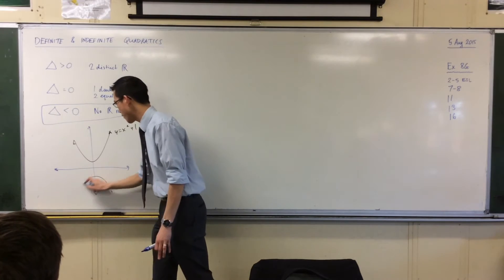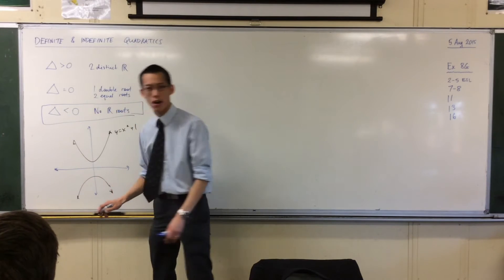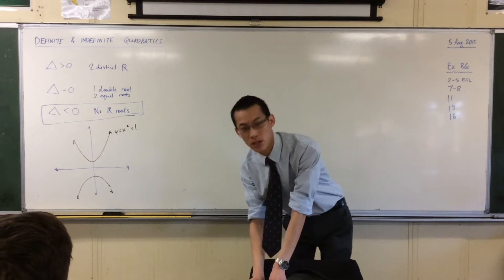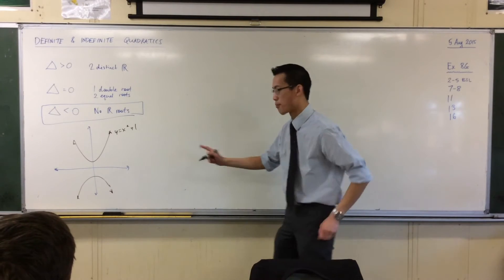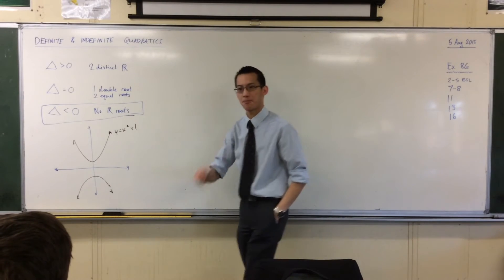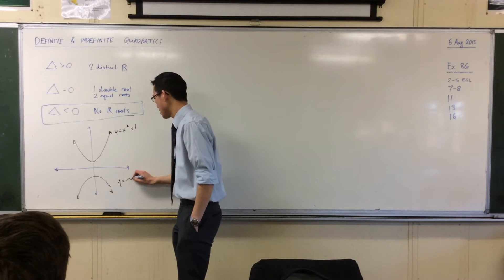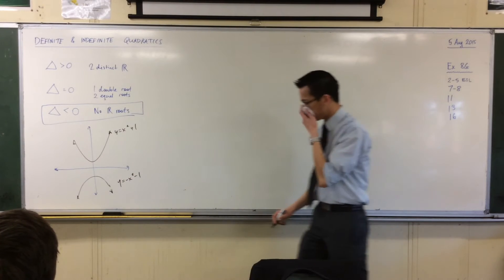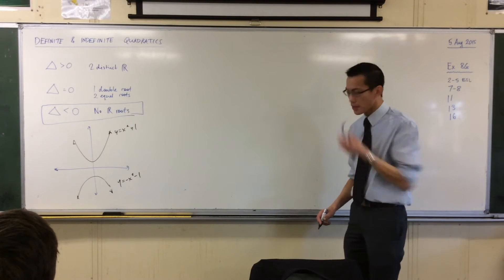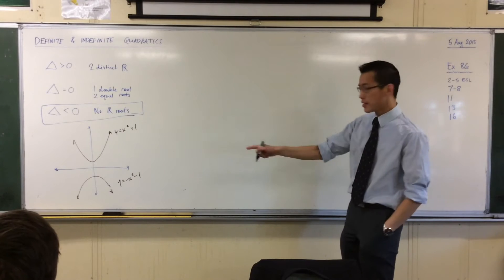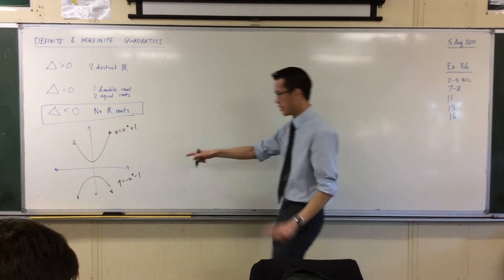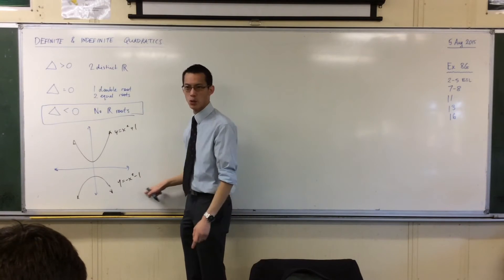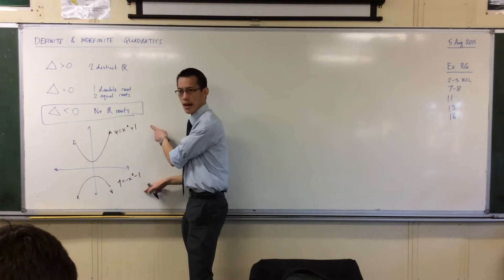You could have a parabola opening downward. A possible equation for such a parabola would be negative x squared minus one. This new quadratic has an identical discriminant to the first one.